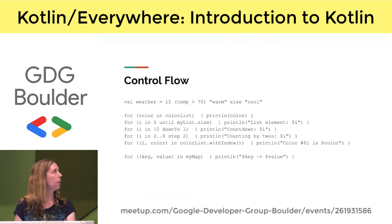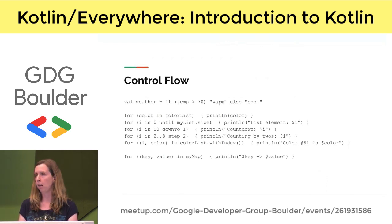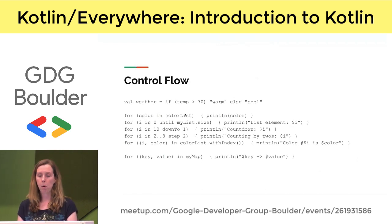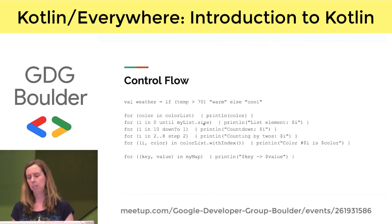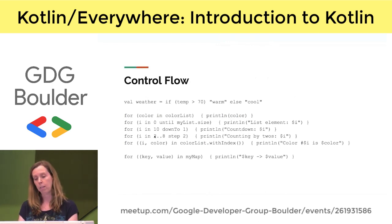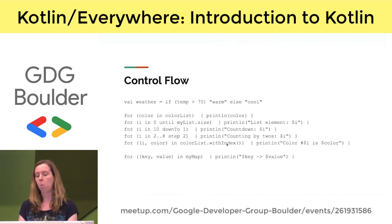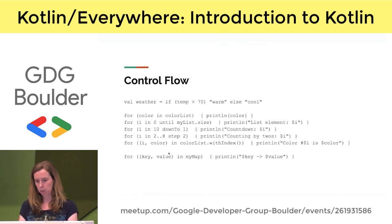Control flow looks very similar to Java. One nice thing is the ternary operator — you don't have to use question marks and colons; you can use if and else, making a very readable ternary. For loops look similar with 'for value in list', but you have more ways to define how you loop. The until keyword goes from zero to size minus one without writing minus one every time. You can also have a decrementing loop with downTo, define your own range with min..max, define a step, and use withIndex to get both index and value. Iterating through a map is easy with 'for key and value'.